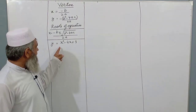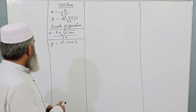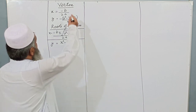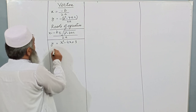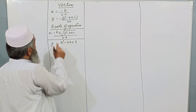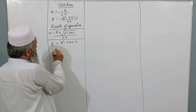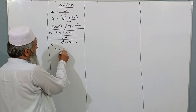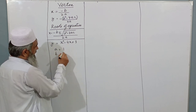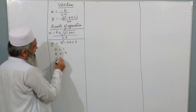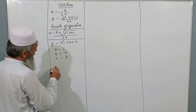Our question is y is equal to x squared minus 4x plus 3. Now, first of all, we identify: a is equal to 1, b is equal to minus 4, c is equal to 3.